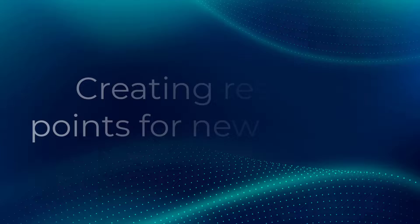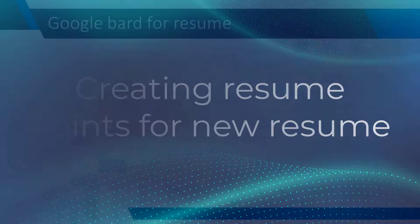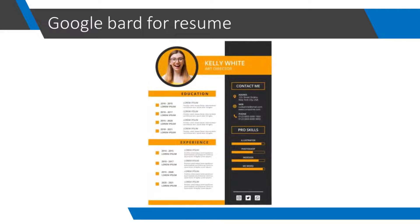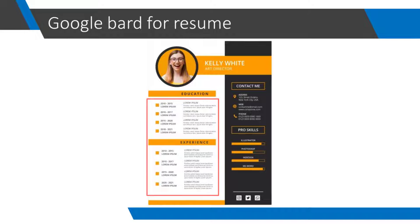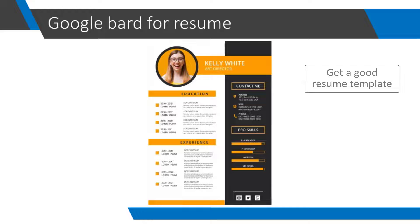Now let's start with creating a resume. Suppose you want to create a resume like this. As of now, Google Bard cannot straight away give you your resume in this format. It can create these points for you and then you need to put these points in your resume template yourself. So step 1 for you will be to get a good resume template. There are many sites from where you can get one, but this is completely up to you. Once you have selected a template, we can start formatting the CV points using Google Bard.